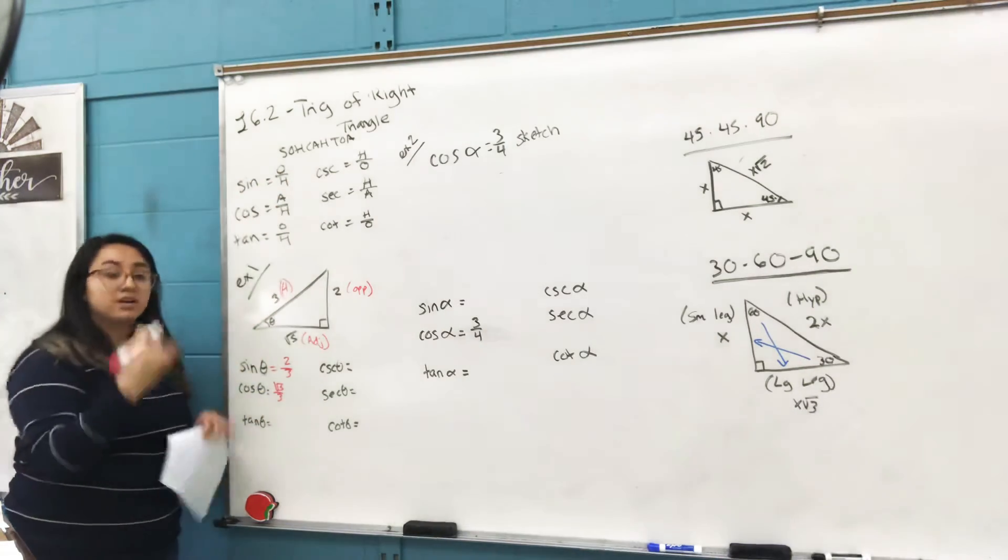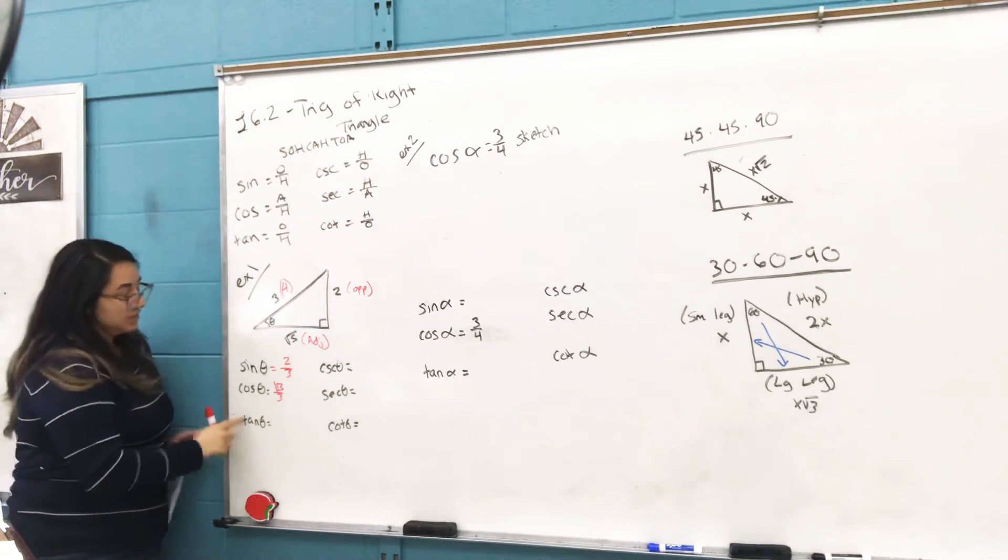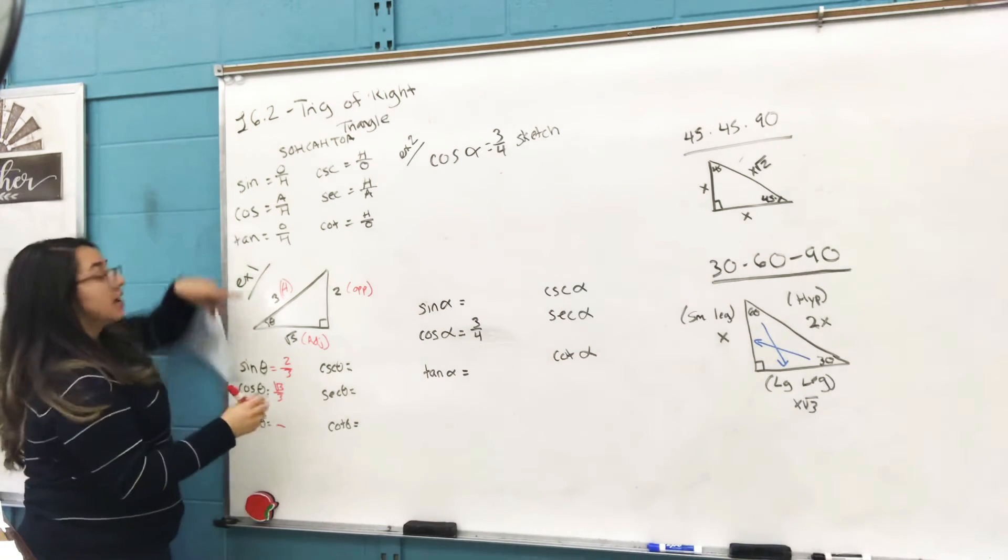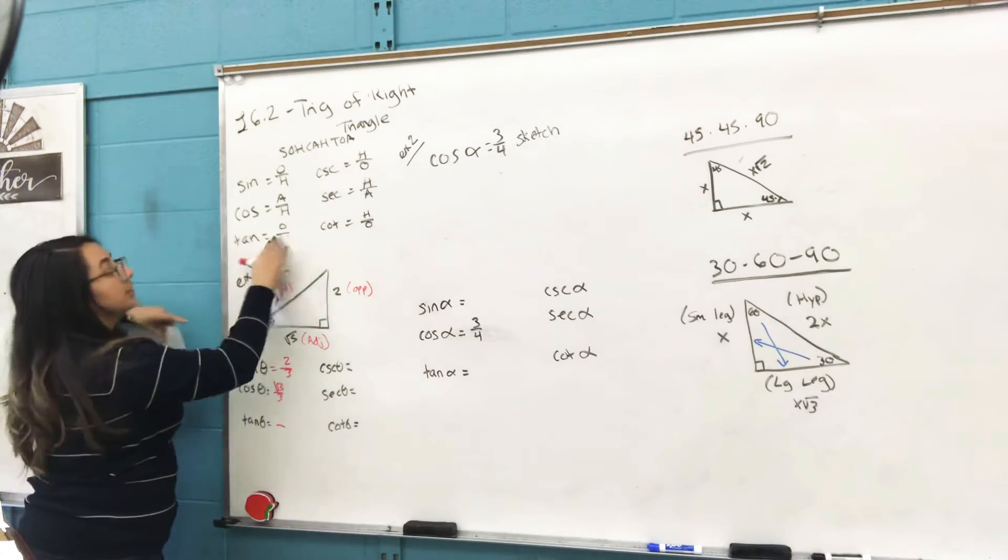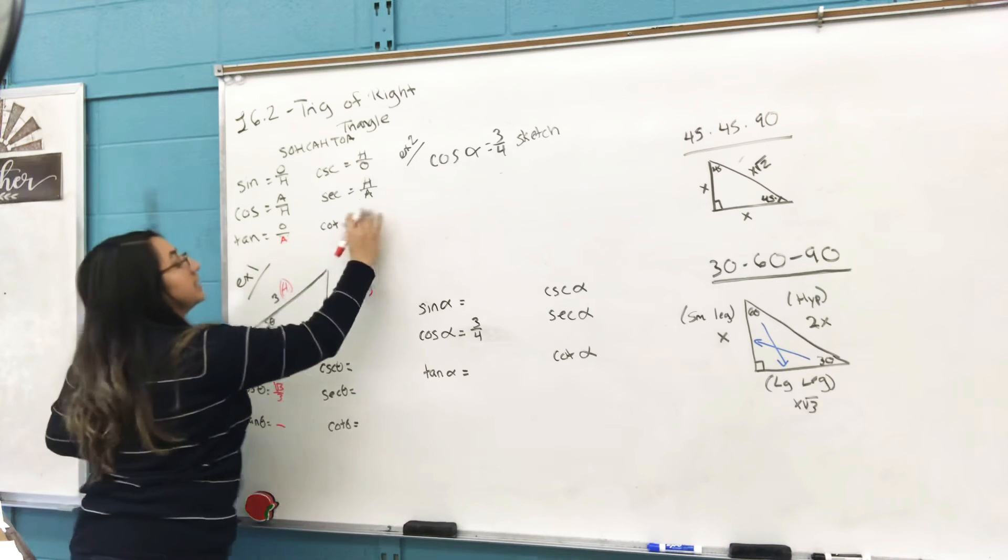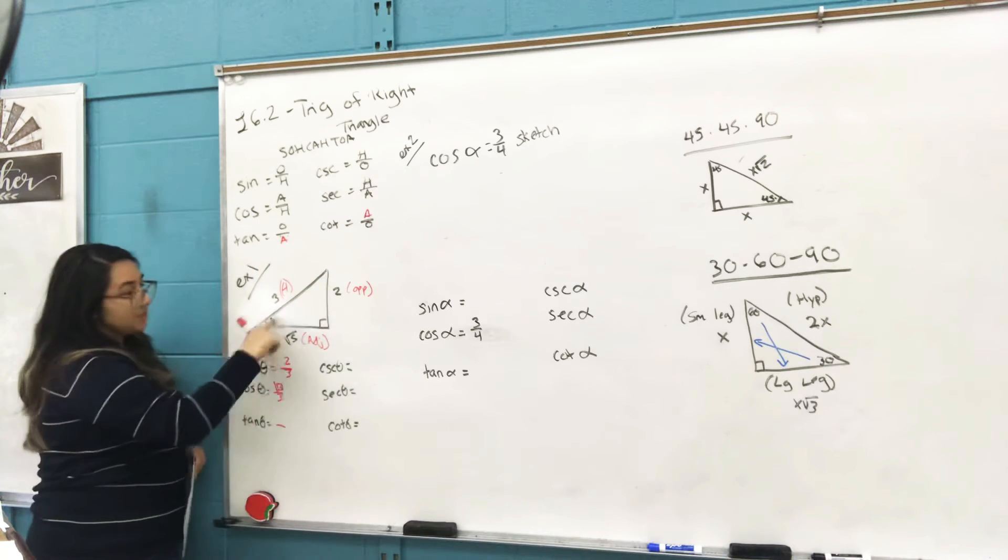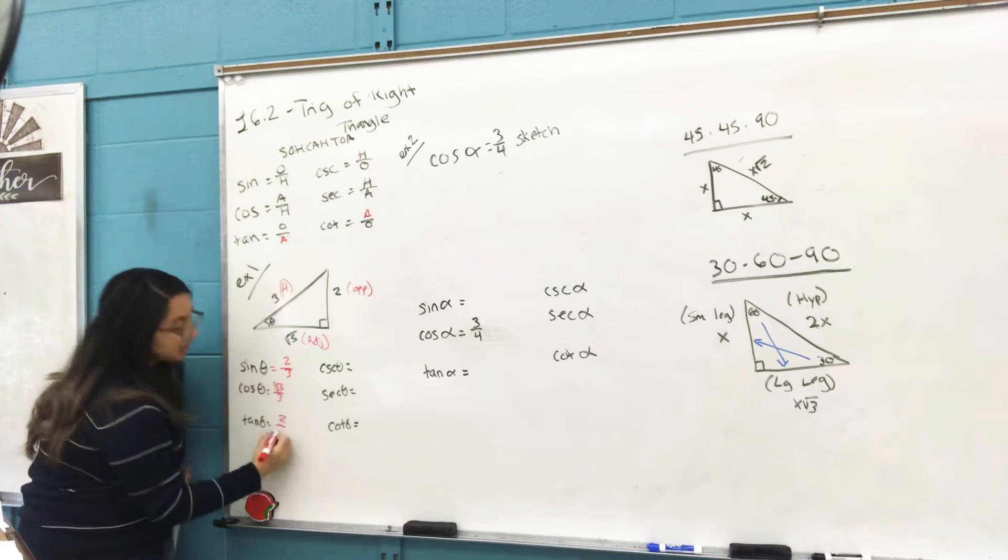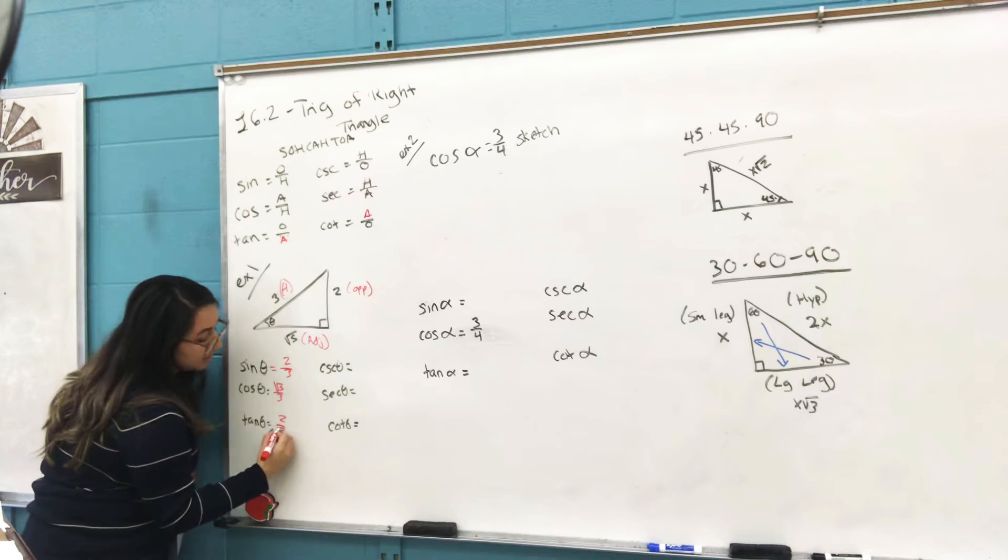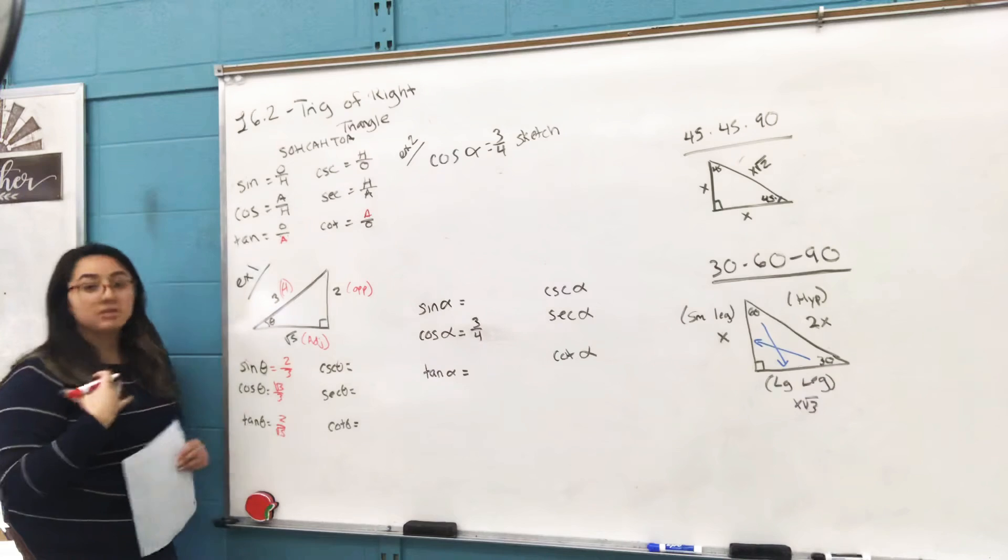So you're always looking at the information up here to solve for these. Your tangent is your opposite side over your adjacent side, so opposite is 2, adjacent is √5.